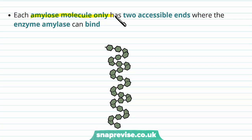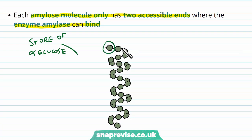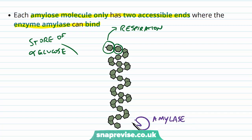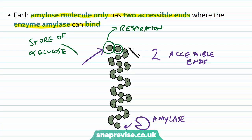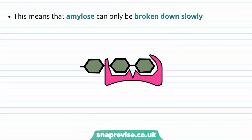Each amylose molecule only has two accessible ends where the enzyme amylase can bind. These are storage molecules for alpha glucose, so whenever energy is needed, we need to snip off alpha glucoses one at a time to be used in respiration. The enzyme amylase breaks down amylose at the accessible ends, but it can only access two points, so it's only really broken down slowly. This means it's not the best way to get alpha glucose from an energy store.